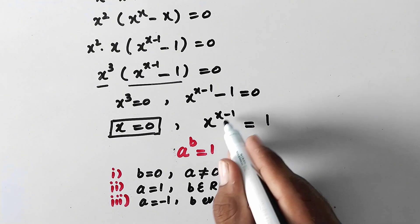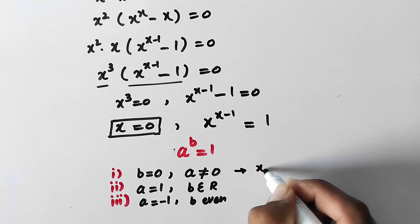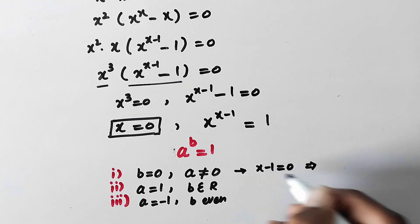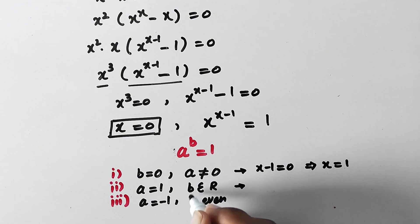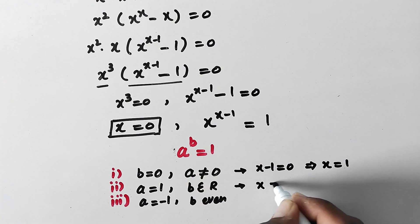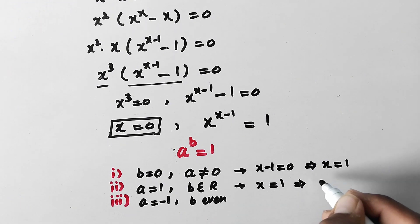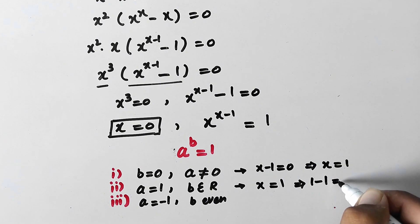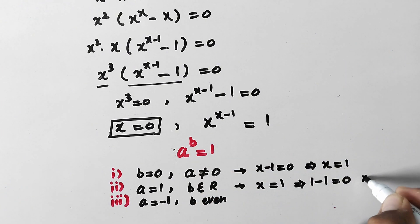Now we will apply these to our equation x to the power x minus 1 equals 1. When b equals 0, here b is x minus 1 equals 0, so x is equal to 1. That is one root. In the second possibility, when a equals 1, the base x equals 1. Then b is x minus 1, and with x equal to 1, we get 1 minus 1 equals 0, and when the power is 0, x will be equal to 1.